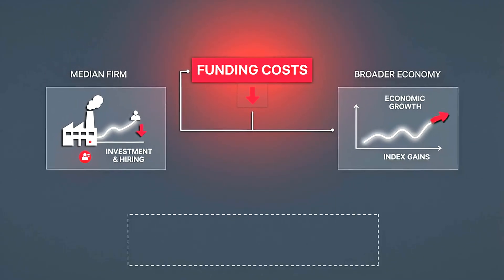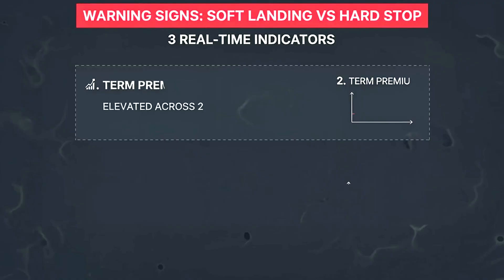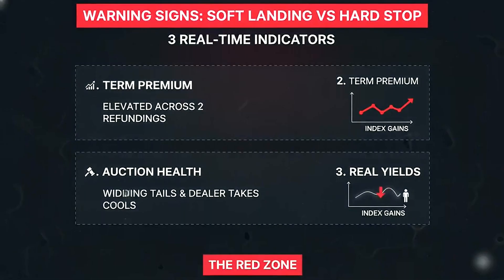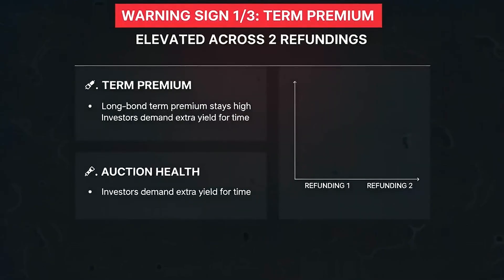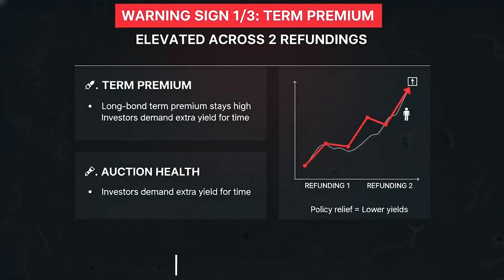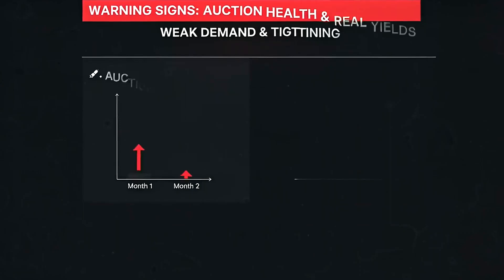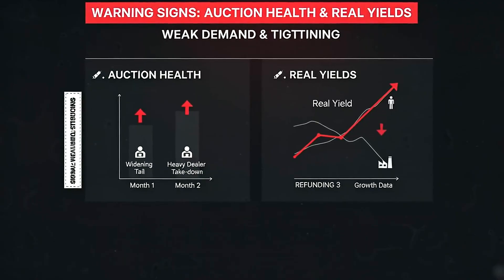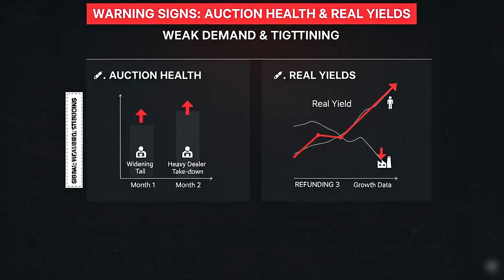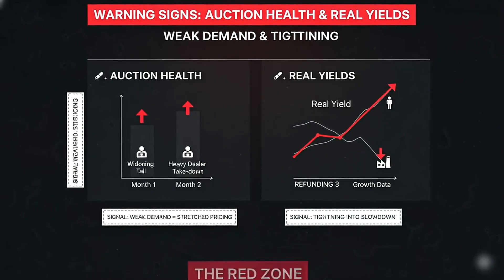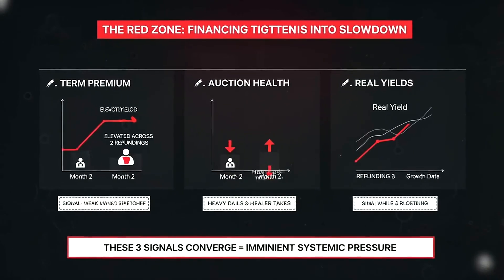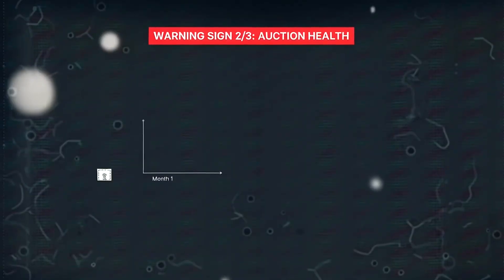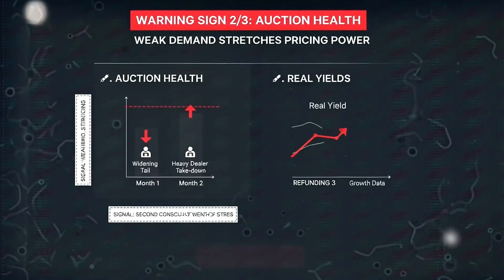Balance sheet choices shuffle pressure among desks. Coming up: three warning signs and how to track them in real time. Three warning signs separate soft landing from hard stop. First: long bond term premium staying high through two consecutive refundings — meaning investors still demand extra pay for time despite policy relief. Second: widening tails at seven or ten or 30-year auctions for two months — weak demand stretches pricing power. Third: rising real yields while growth data cool — financing tightens into slowdown. Those three together are the red zone. Warning sign two: a second month of long tenor auction tails with heavy dealer takedowns.